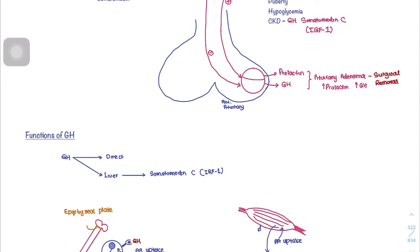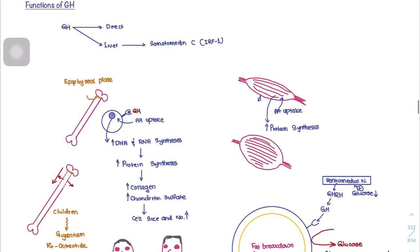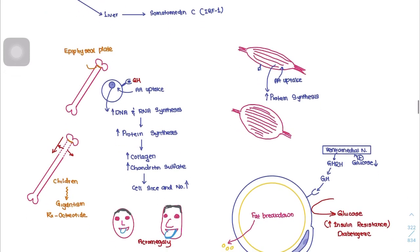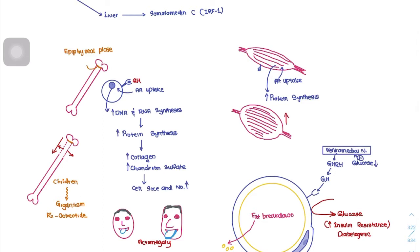The second function of growth hormone is that it acts on muscles, causing an increase in amino acid uptake. When that happens, protein synthesis increases and the muscle becomes bigger — this is called addition of lean body mass.